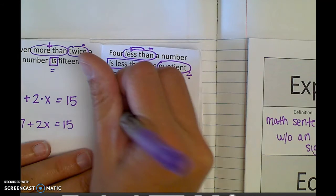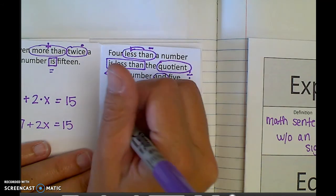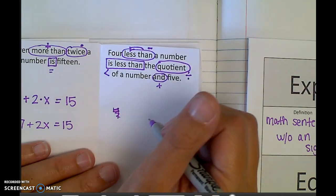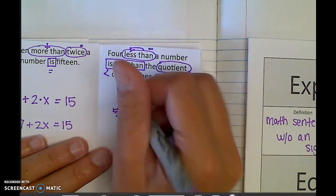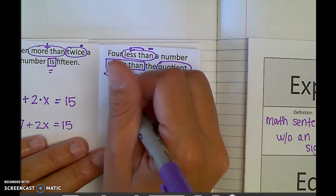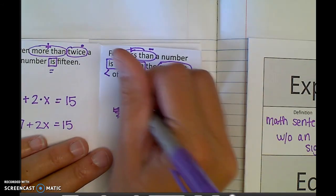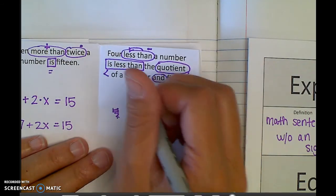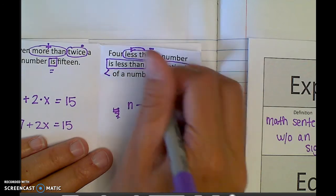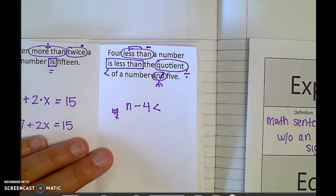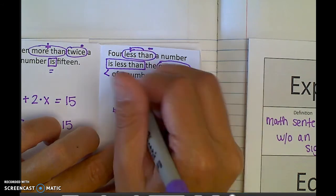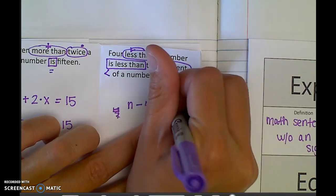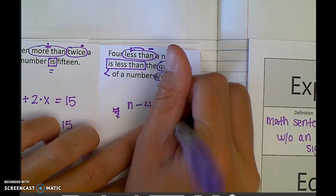So when I just write this out, I have 4 less than a number. Oh, it's a turn around word. So I got to turn those around. A number is something I don't know. So we'll call it n minus 4. Is less than the quotient of a number and 5. So yeah, this isn't really plus. It's just saying the quotient of two things. So the quotient of a number, I'm going to assume the same number and 5. The quotient is divided.